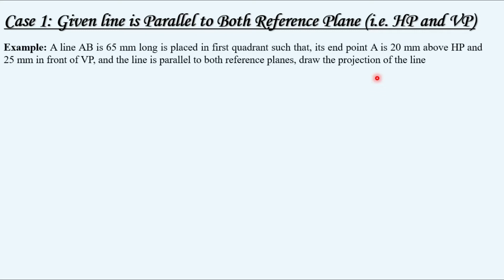Case 1: given line is parallel to both reference planes, that is HP and VP. Let us take an example. A line AB is 65 mm long, placed in the first quadrant such that its endpoint A is 20 mm above HP and 25 mm in front of VP. The line is parallel to both reference planes. Draw the projections of the line.